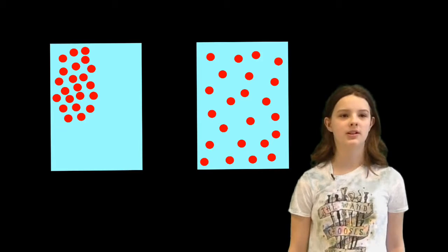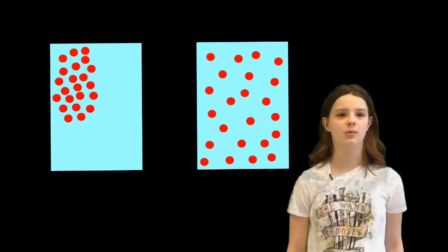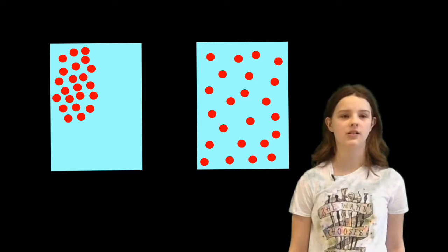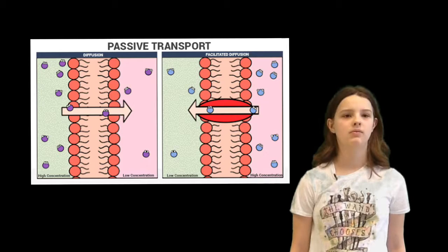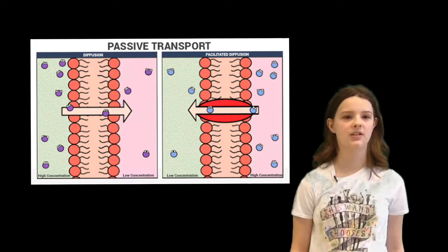Diffusion is the process by which molecules tend to move from one area of higher concentration to an area of lower concentration. Passive transport is the movement of material through a cell membrane without using energy.